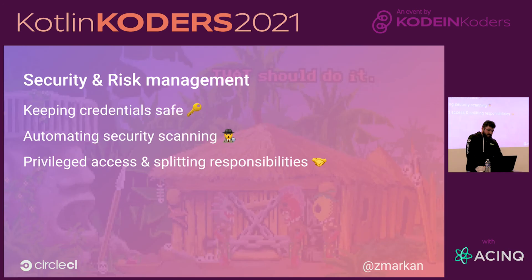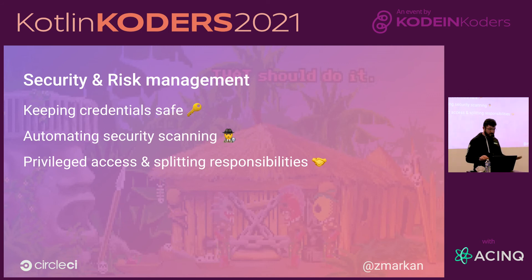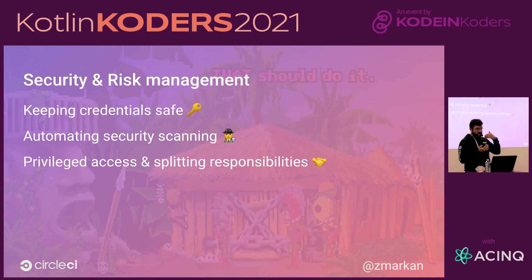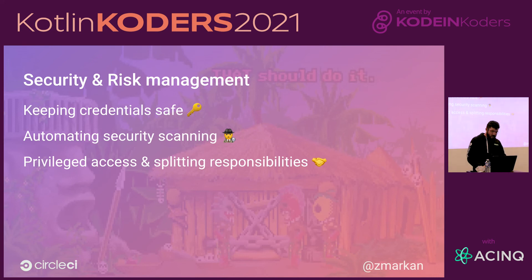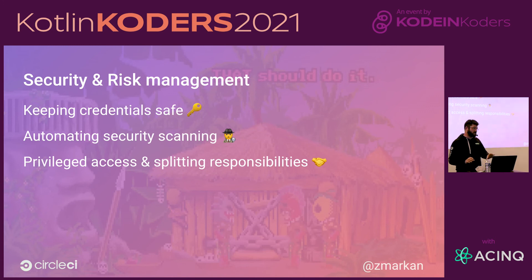Speed covered, let's talk about security — and this is universal to every language and platform. Keep your credentials safe and outside of your Git repositories. Every tool allows you to have encrypted credentials injected at build time: API keys, AWS environment keys for deploying to production, all of that. Automate security scanning as well — run scans on your dependencies to detect if something down the dependency graph contains malware. And think about splitting responsibilities between different parts of your CI/CD pipeline, so you're not giving production deployment credentials to your unit test jobs.